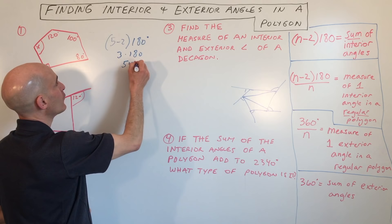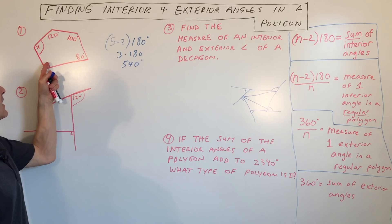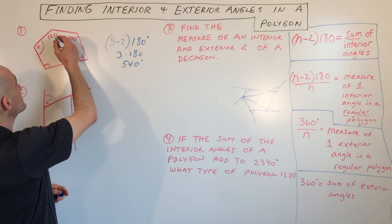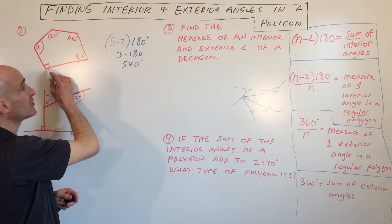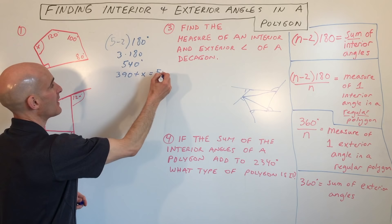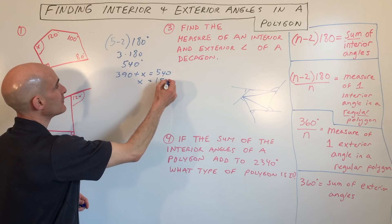So if we want to solve for x, this missing angle here, we're going to add up all these angles plus x equals the total 540. So let's do that. So that's 120 plus 80 is 200, plus 100 is 300, plus this right angle here, that's 90, that's 390. So we have 390 plus x equals 540. So if we subtract 390, what do we get? We get 150 degrees. So that's this angle right here.